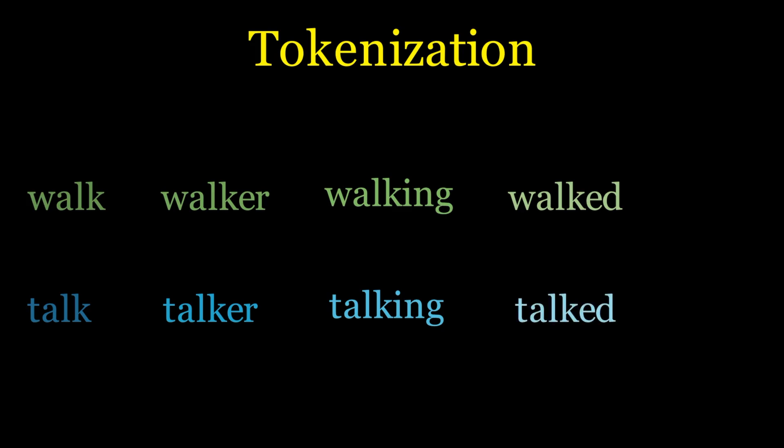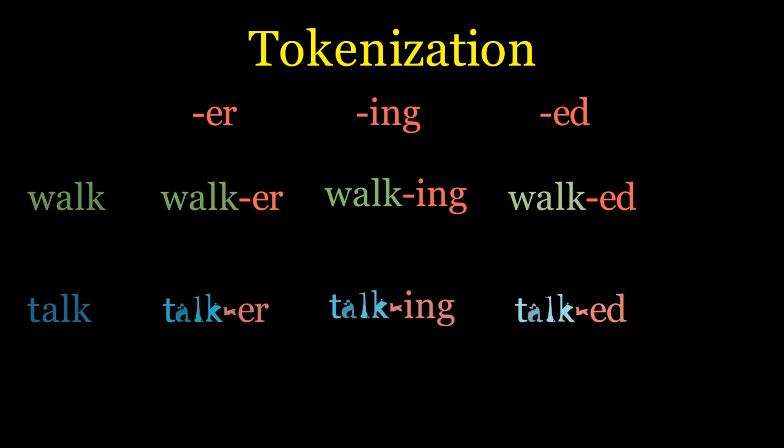When we tokenize, we break down these words into similar units. Walker becomes walk and -er. Walking turns into walk and -ing. This process reveals the fundamental building blocks of language.